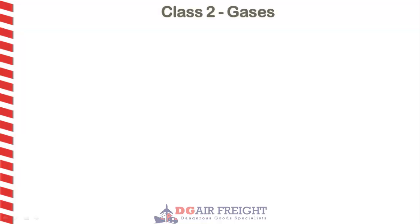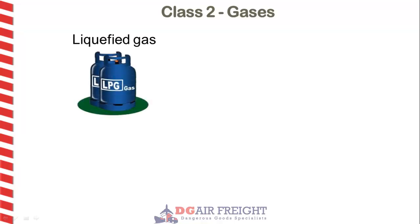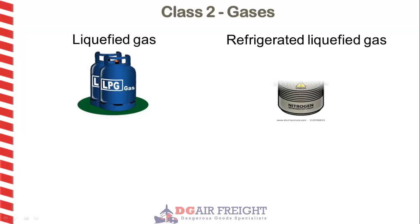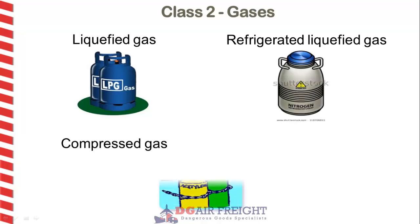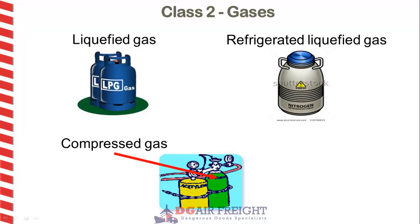Class 2 comprises gases and consists of liquefied gases, for example LPG; refrigerated liquefied gases, for example liquefied nitrogen; compressed gases, for example oxygen; and gases in solution, for example acetylene.